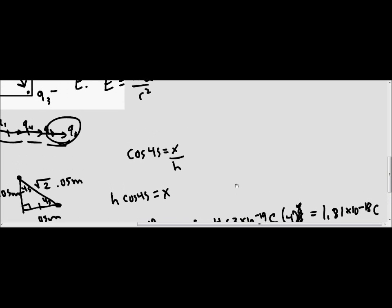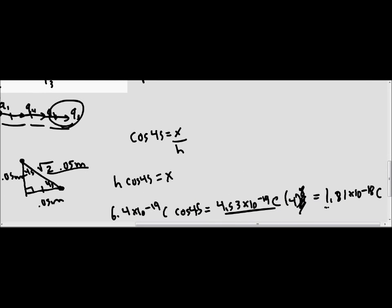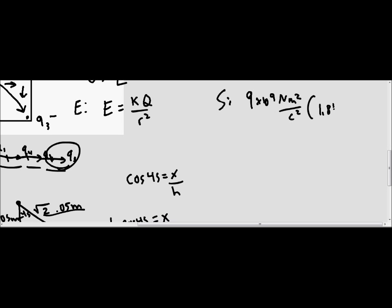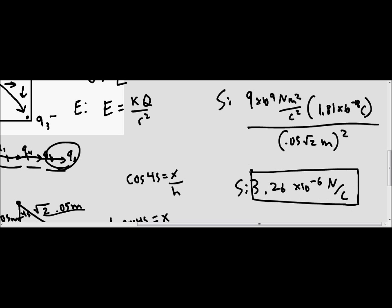Well, now that we have our distance, which is this, and we have our charge, and we already know k, we can solve for the electric field. So we've got k, which is 9 times 10 to the 9 newtons meters squared over coulombs squared times 1.81 times 10 to the negative 18 coulombs over 0.05 root 2 meters squared. And the answer that that gives us is 3.26 times 10 to the negative 6 newtons over coulombs. And that is the final answer.